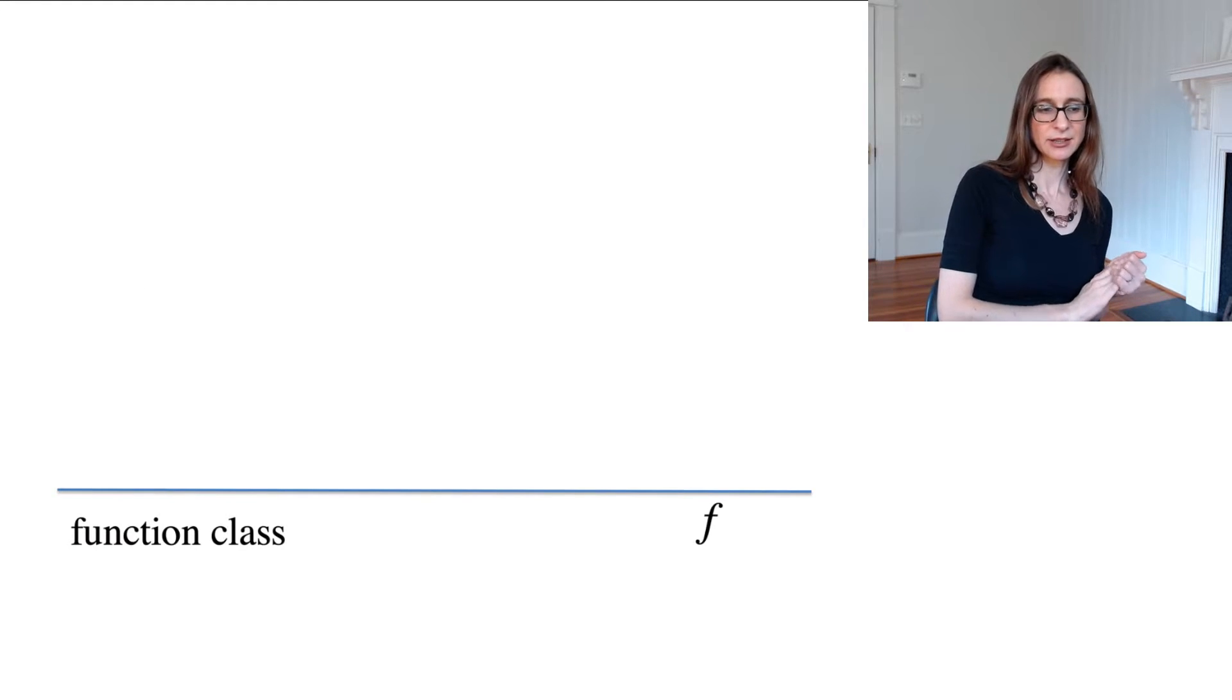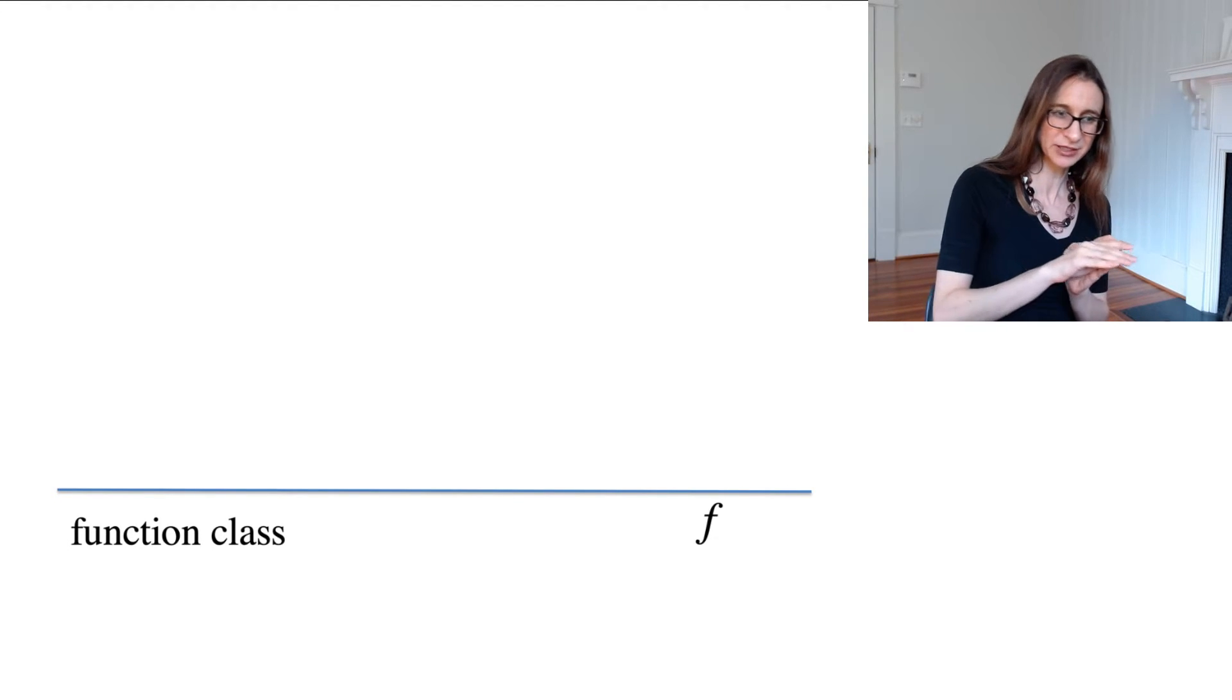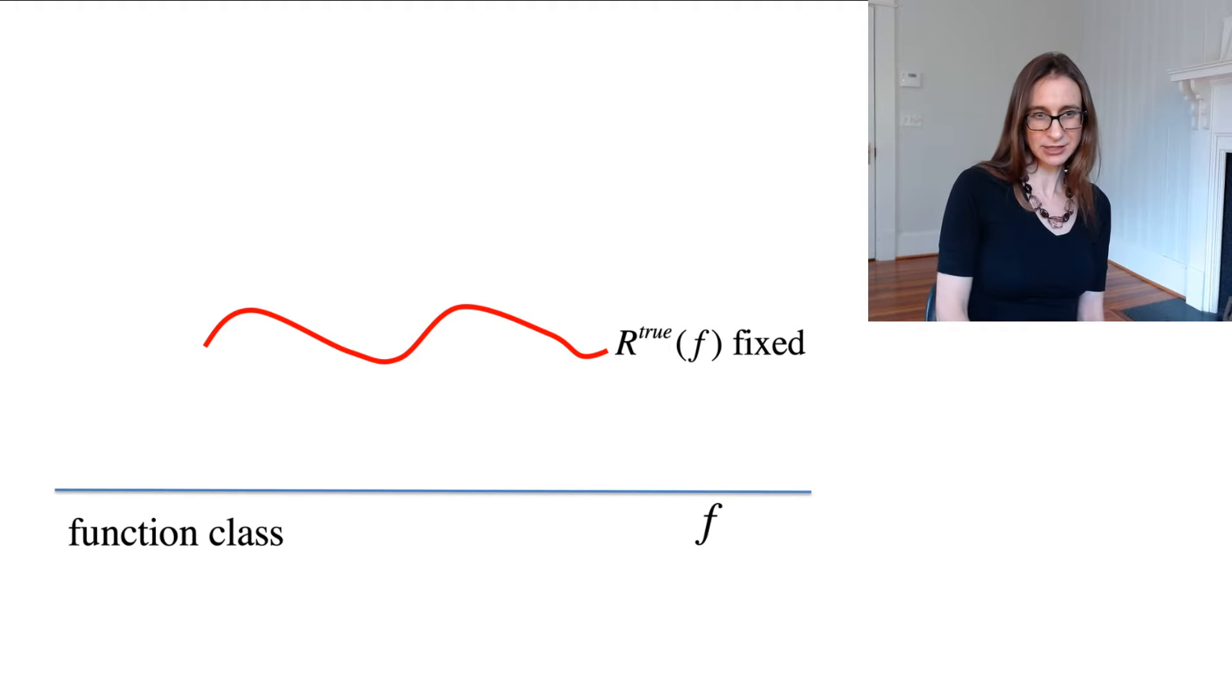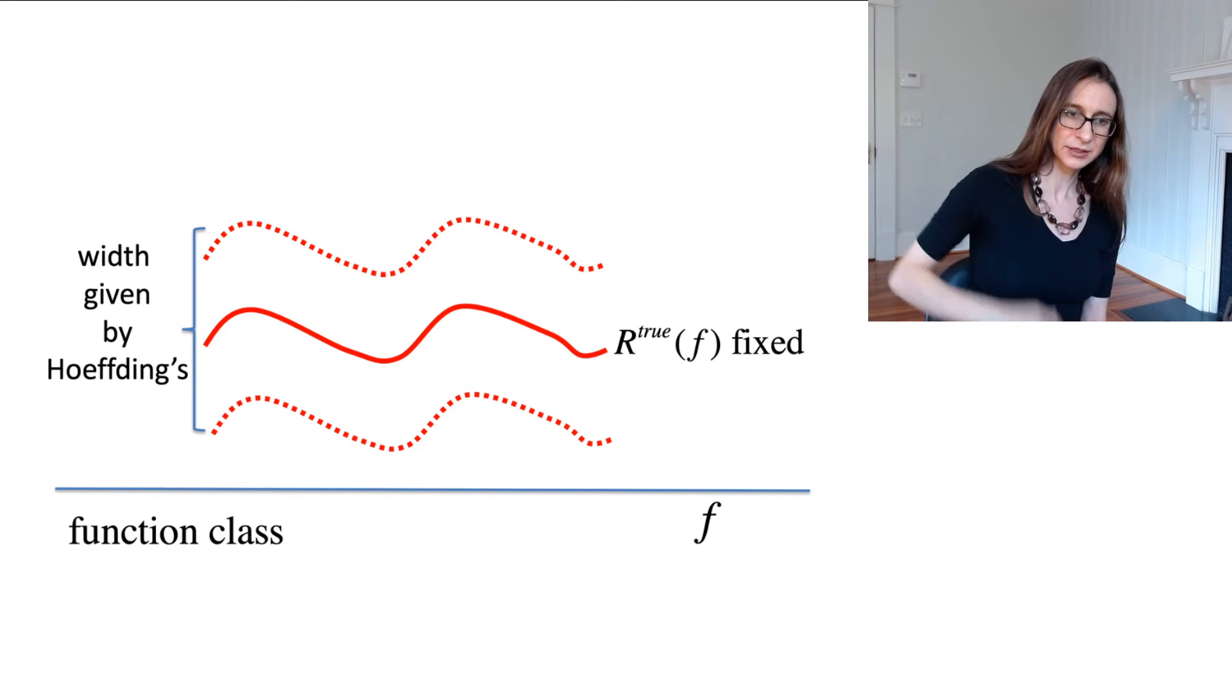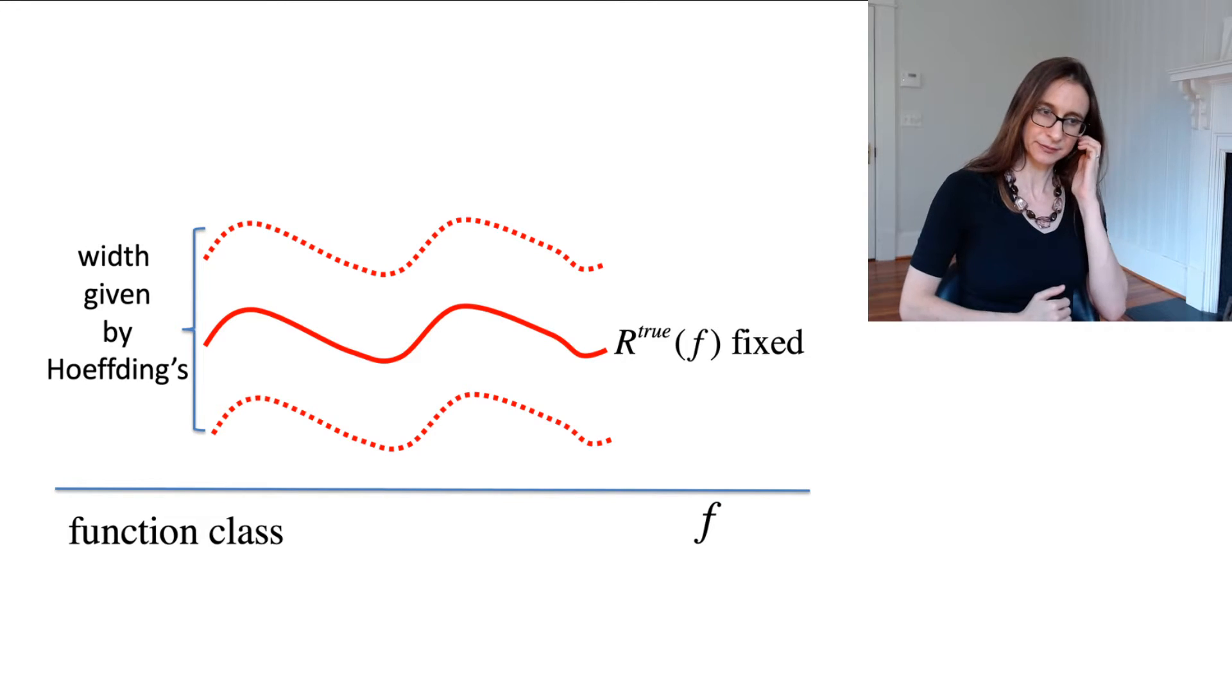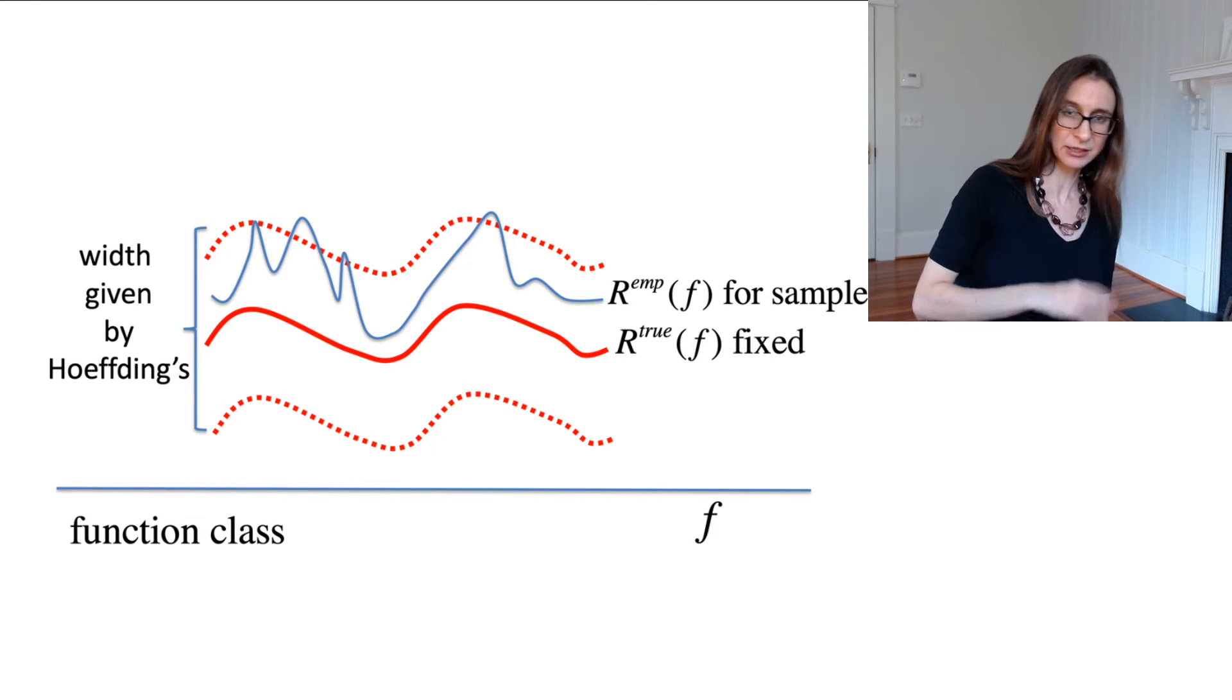So let's plot, I'm just going to put the functions along the horizontal axis. I know it's a bit abstract, but let's just go with the flow here. So put the functions on the horizontal axis, and then I'm going to plot the true risk. So the true risk is fixed. It's not random. You have to know the whole distribution of data to calculate it, which we don't, but I'm just going to plot it, assuming I know everything. And then Hoeffding's inequality gives us this kind of band around the true risk. And Hoeffding's inequality says that for fixed F with high probability, the empirical risk is in the band.